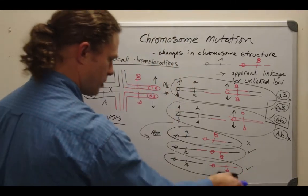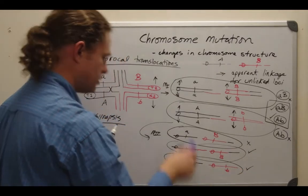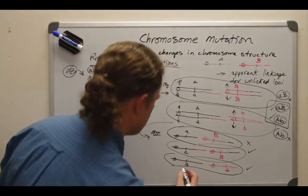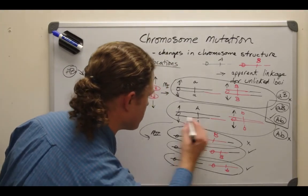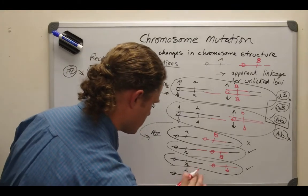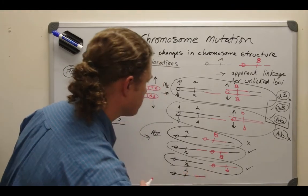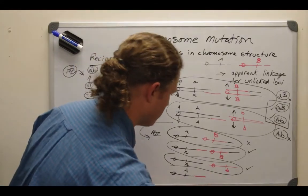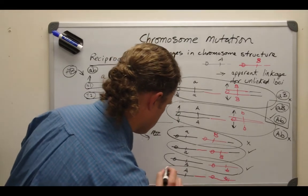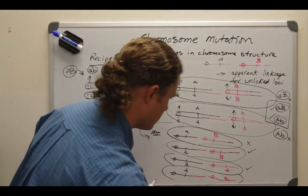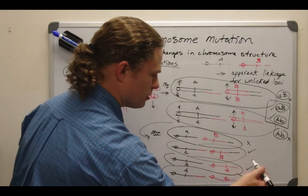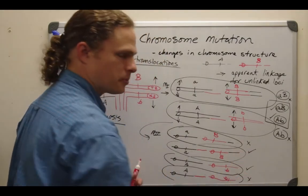Let's squeeze in the last cell. It has a big A on a translocated structure paired with a little b on a non-translocated structure. That cell is not functional either. So these two middle ones are functional, and the first and last are non-functional products of meiosis.